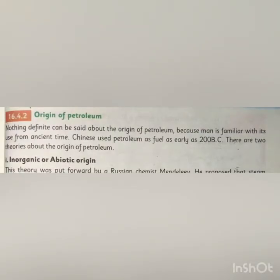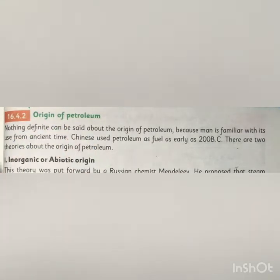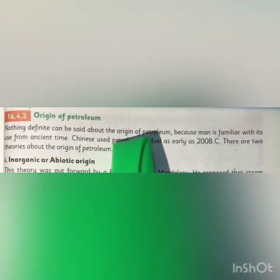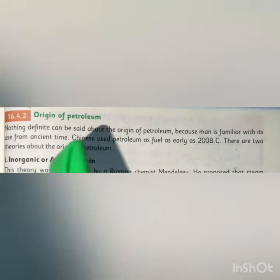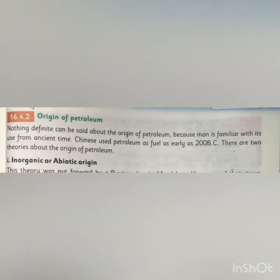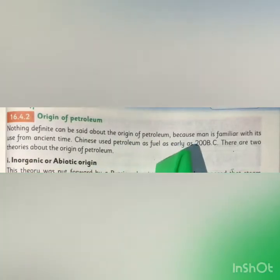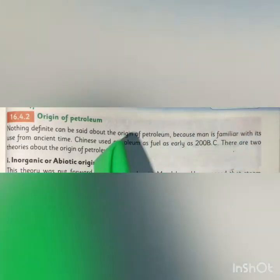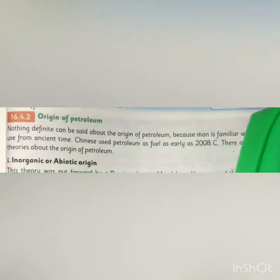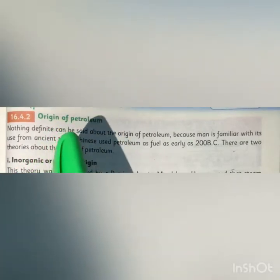Moving on to the next page, page number 205, we have the origin of petroleum. Nothing definite can be said about the origin of petroleum because man has been familiar with its use from ancient times. Chinese used petroleum as fuel as early as 200 BC. There are two theories about the origin of petroleum: one is inorganic or abiotic origin, and the other is organic origin.